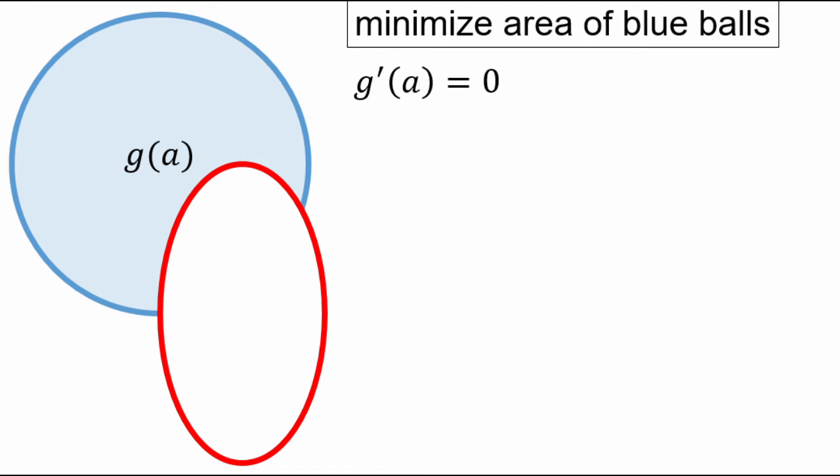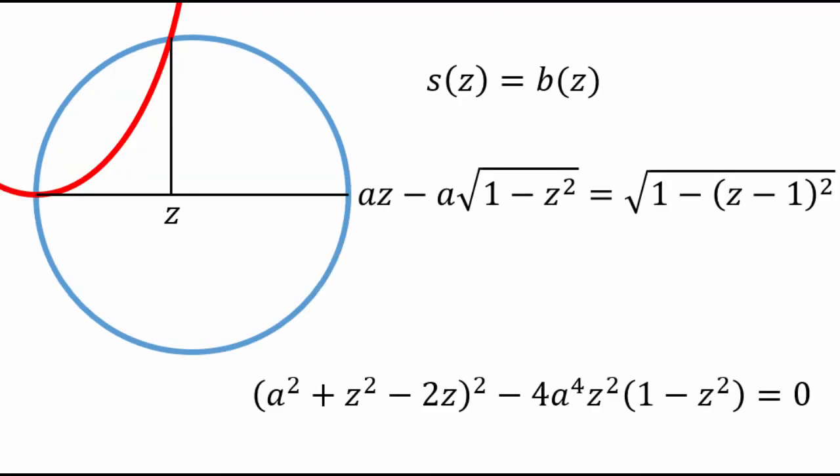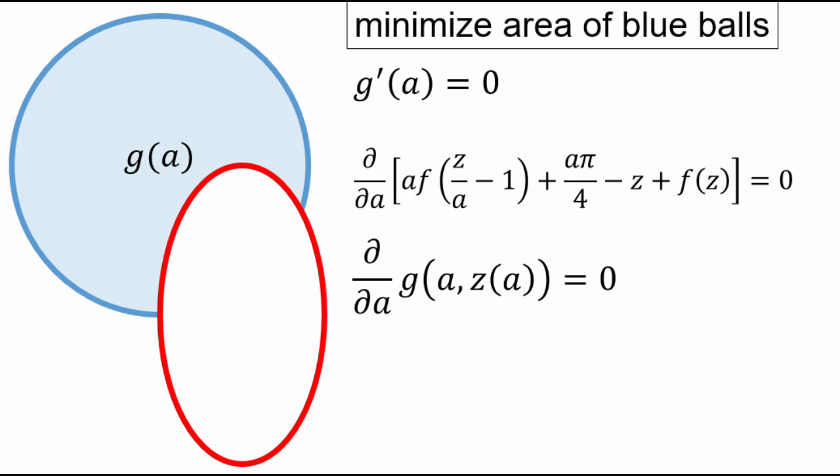Now that sounds pretty simple, except g depends on those f functions, which also depends on some quartic solution z. So this might be a little harder than we anticipated. But recognize that z is a function of a, right? Because z is a solution to this quartic equation, which depends on a. And now the key step is going to be treating the z as an unknown to be solved for along with a. So the area function is now a function, not just of a, but of both a and z.